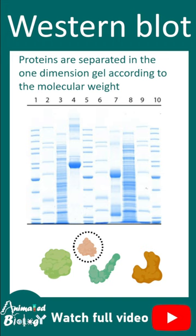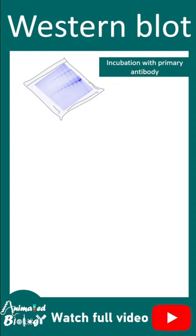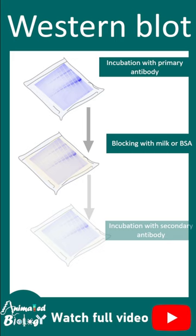But first, the content of the gel — that means all the proteins — are basically transferred into a PVDF membrane with electroblotting technique. Then the membrane is incubated with primary antibody, blocking solution, and then the secondary antibody.